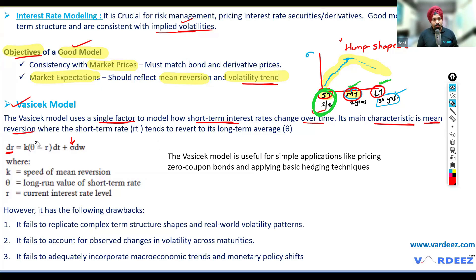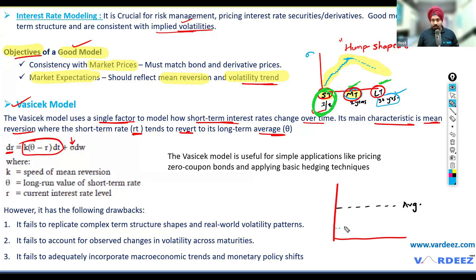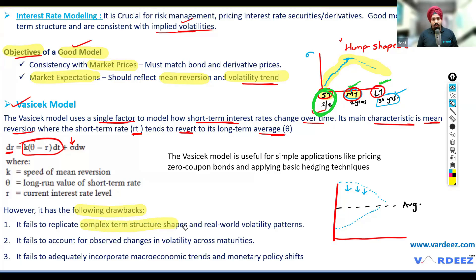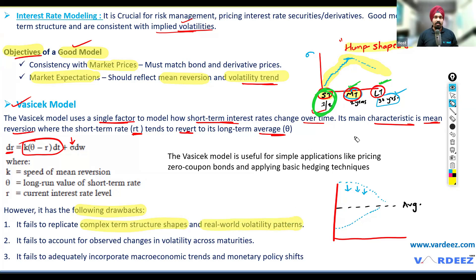Its main characteristic is mean reversion — where the short-term rate tends to revert to its long-term average. If the rate is on the lower side, it will try to pick up and revert to its mean level. If it's above the mean, the model will predict a downward trend. That's the entire objective of the VASICEK model. But it has the following drawbacks: it fails to replicate complex term structure shapes. The shape can be a hump, it can go up and fall down and pick up again — there can be different term structure shapes, and the VASICEK model doesn't capture that. It also doesn't predict the real-world hump-shaped volatility pattern.